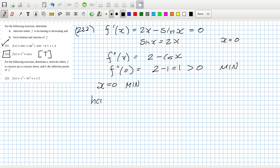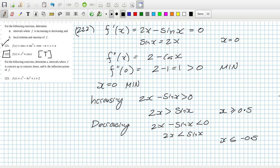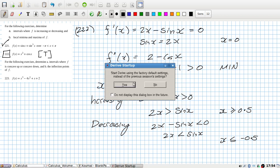Increasing, you would need 2x minus sine x to be positive. You would need 2x to be more than sine x. And that will happen for sure when x is greater than or equal to 0.5, but could it happen sooner? And likewise, decreasing when 2x minus sine x is less than 0, or in other words, 2x is less than sine x. And again, that will happen for sure when x is less than minus 0.5, but could it happen sooner than that? Let's find out.